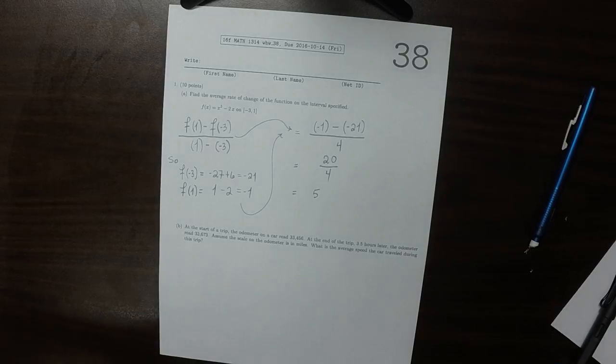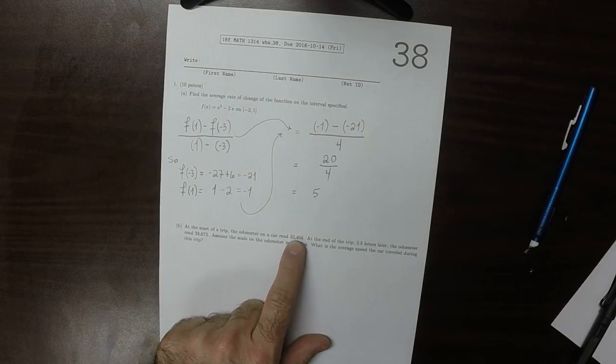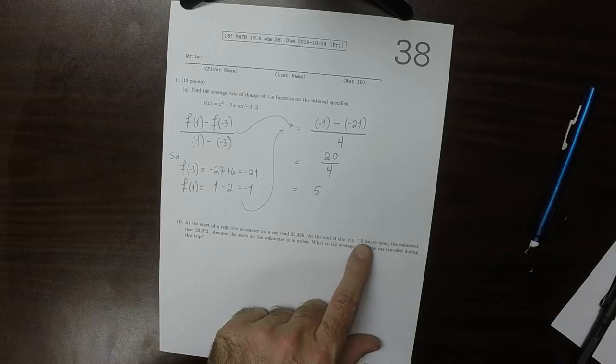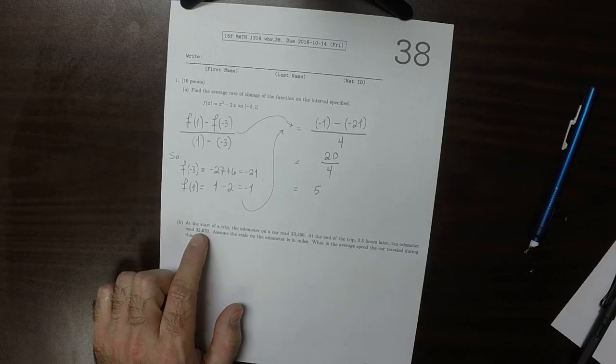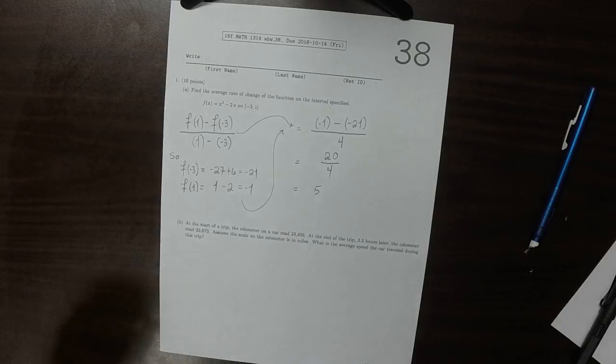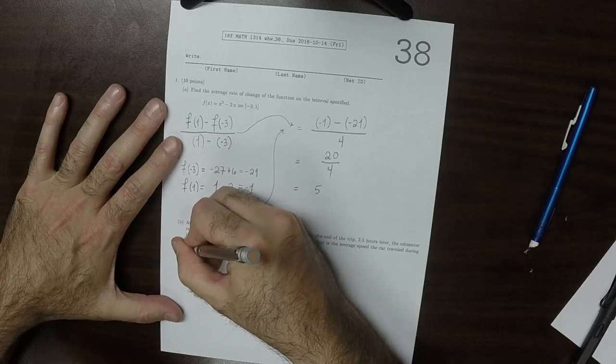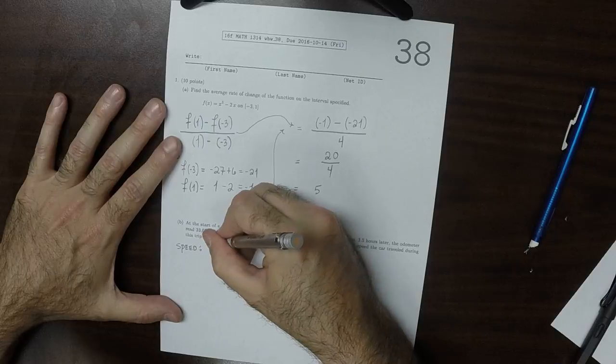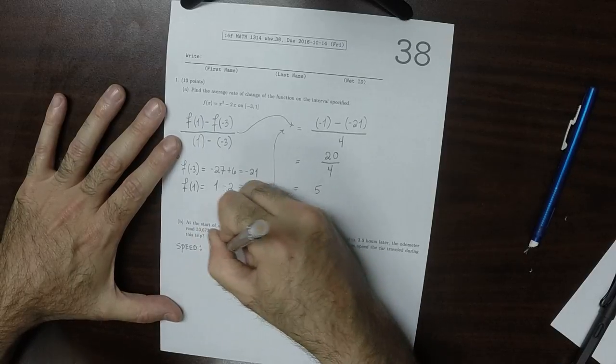So then at the start of a trip, the odometer of a car read this. And then 3 and a half hours later, the odometer read that. What is the average speed during this trip? So then speed. Remember that speed is distance over time.